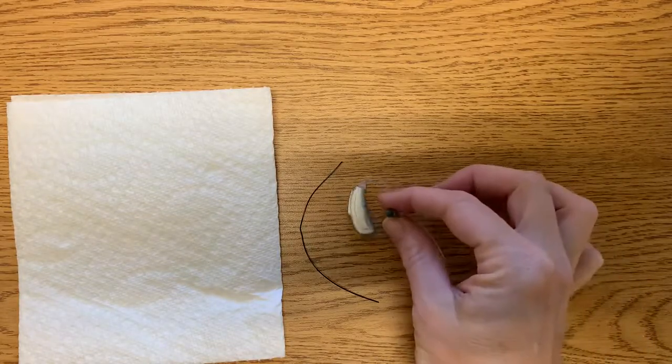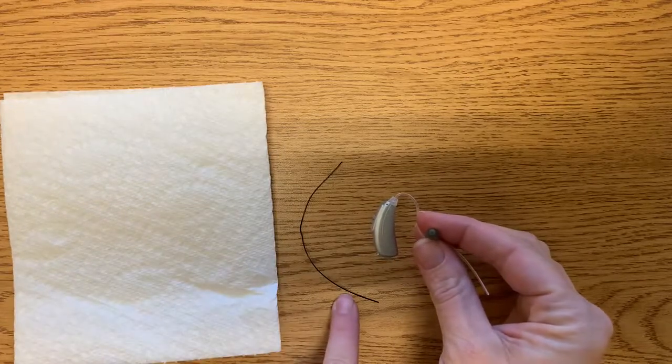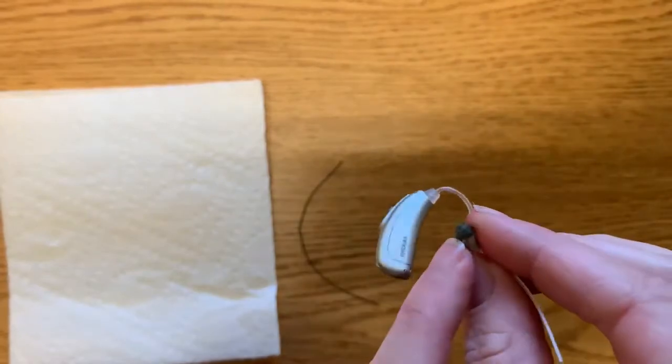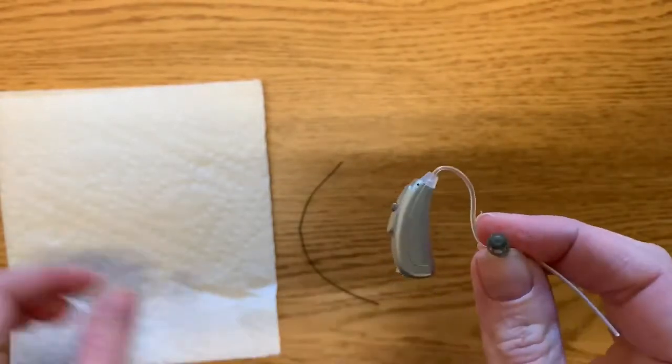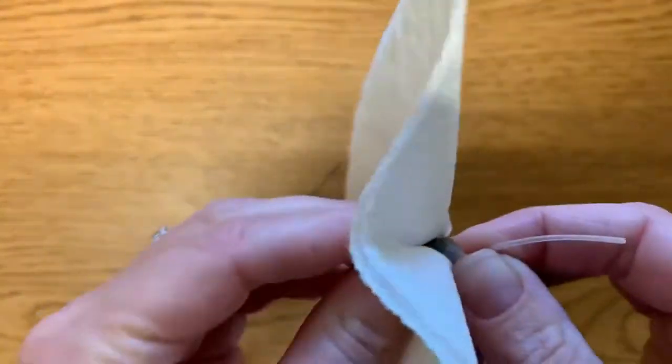To clean the Roger Focus, you need a paper towel or cloth and a cleaning wire. First, you're going to look right here at that dome tip to see if you can see any earwax. If you do, just use a cloth or paper towel to squeeze it off.